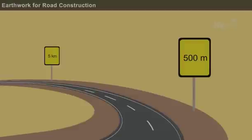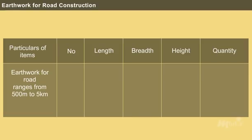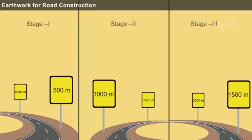For a distance of 500 metres to 5 kilometres, the unit of lead is taken as 500 metres and the item of work is measured separately in different stages as follows.